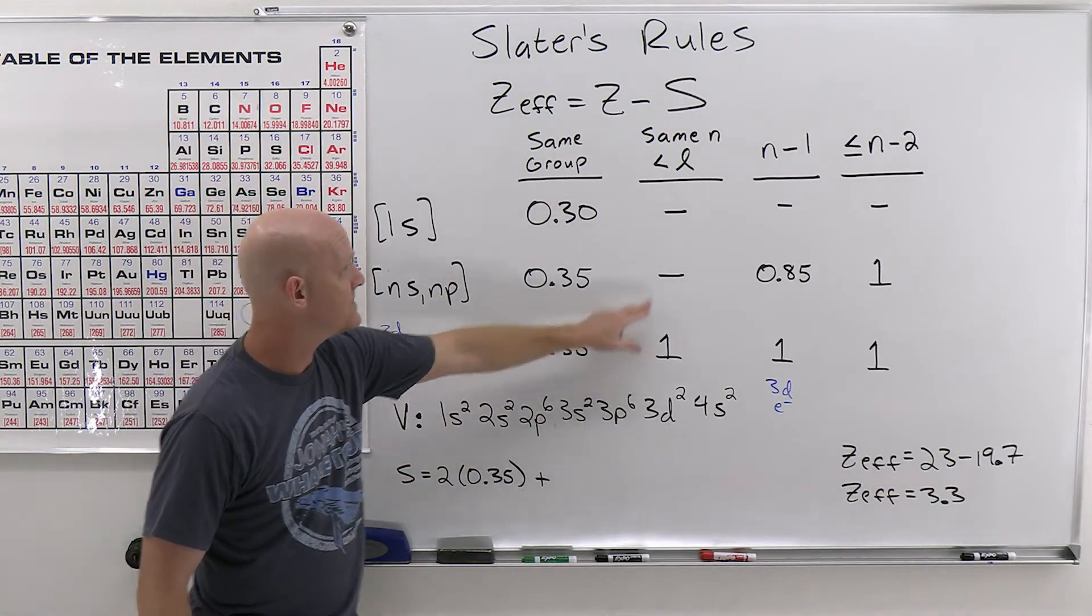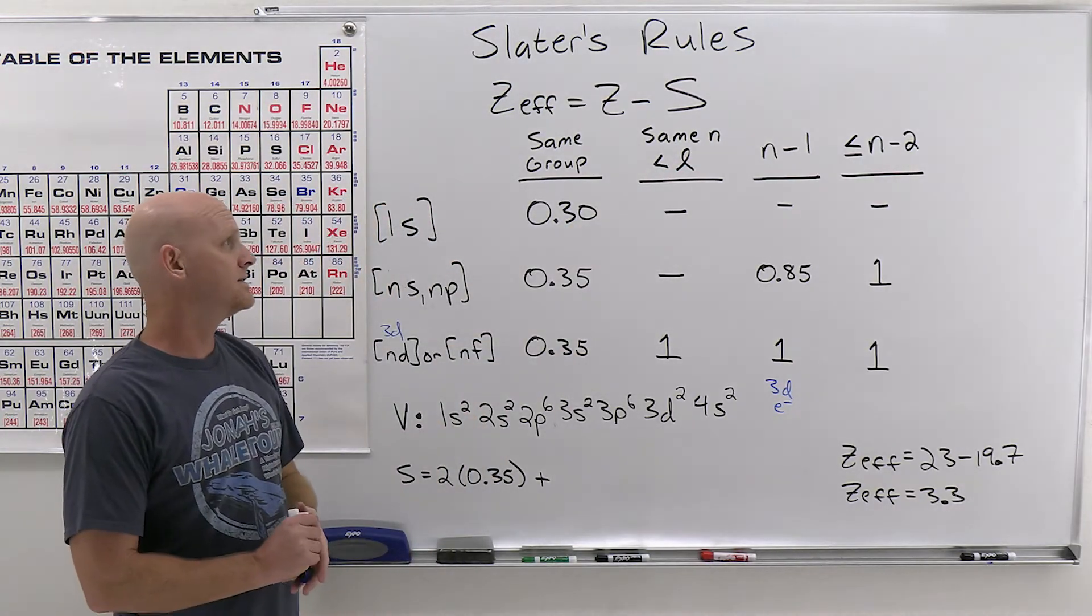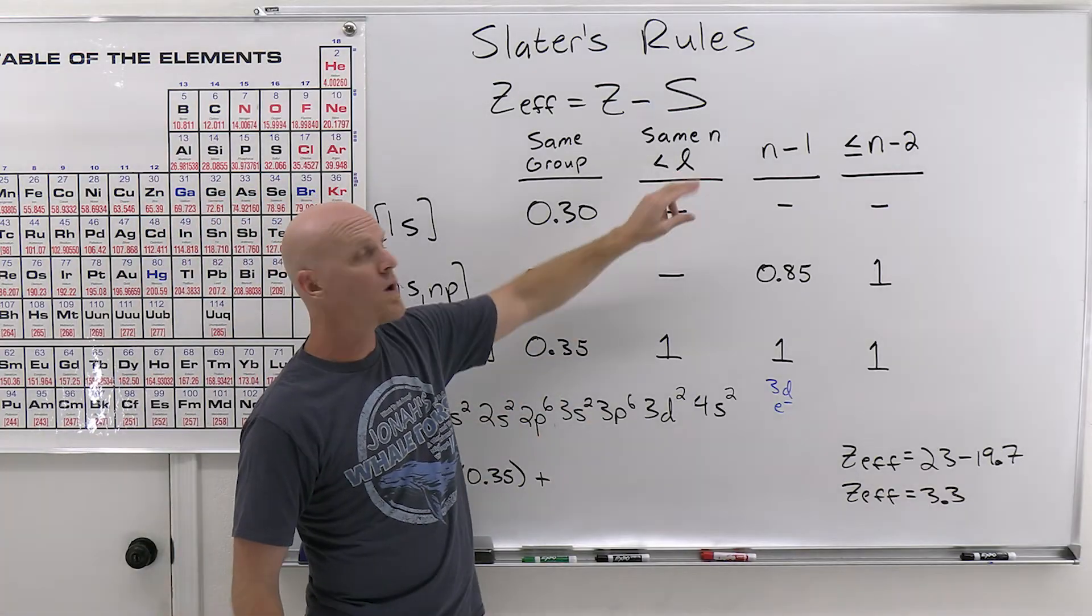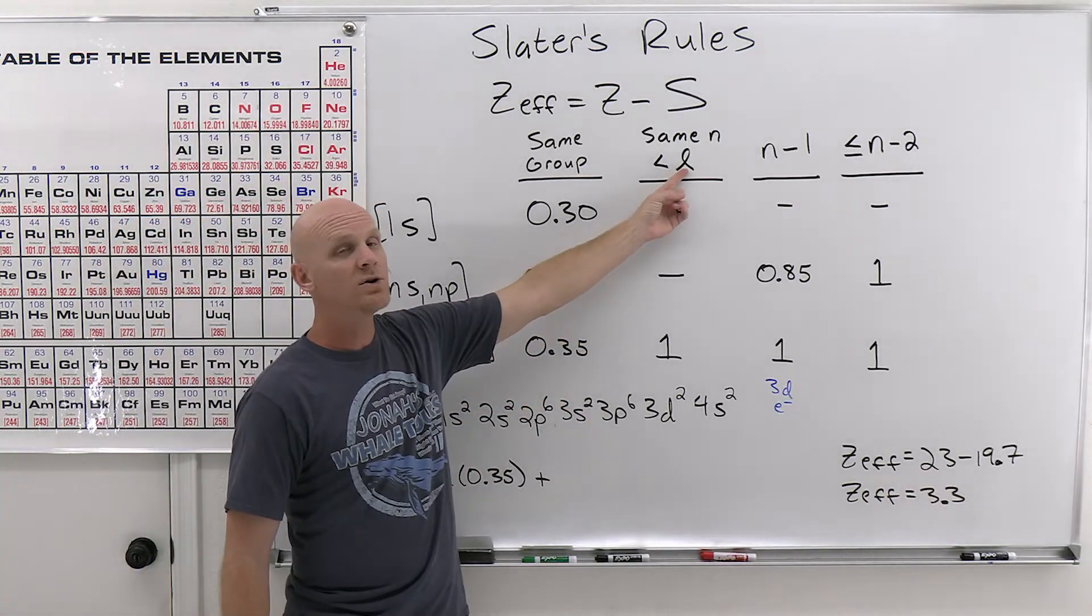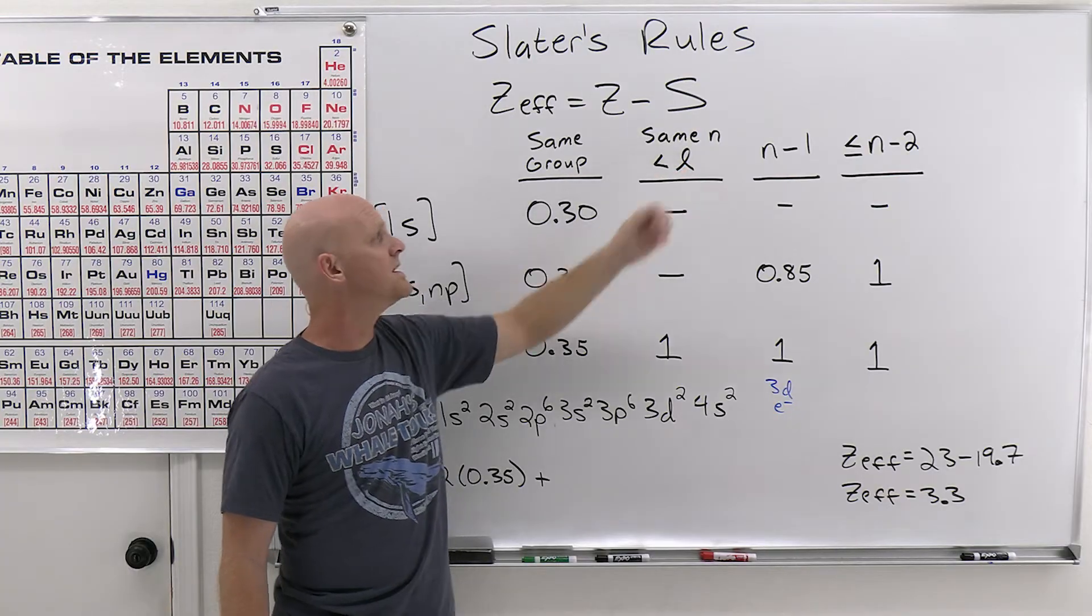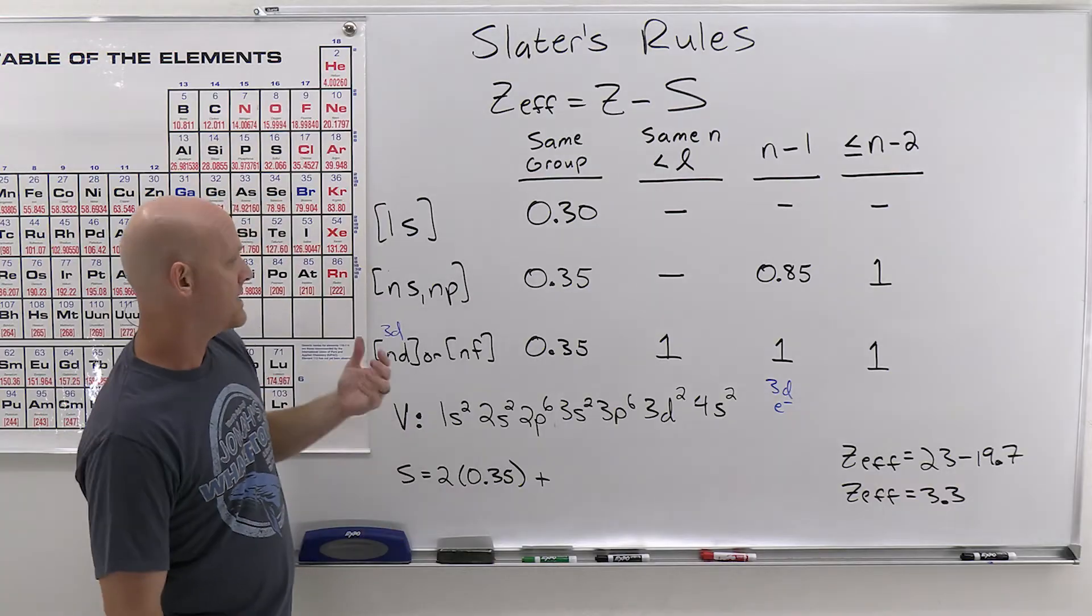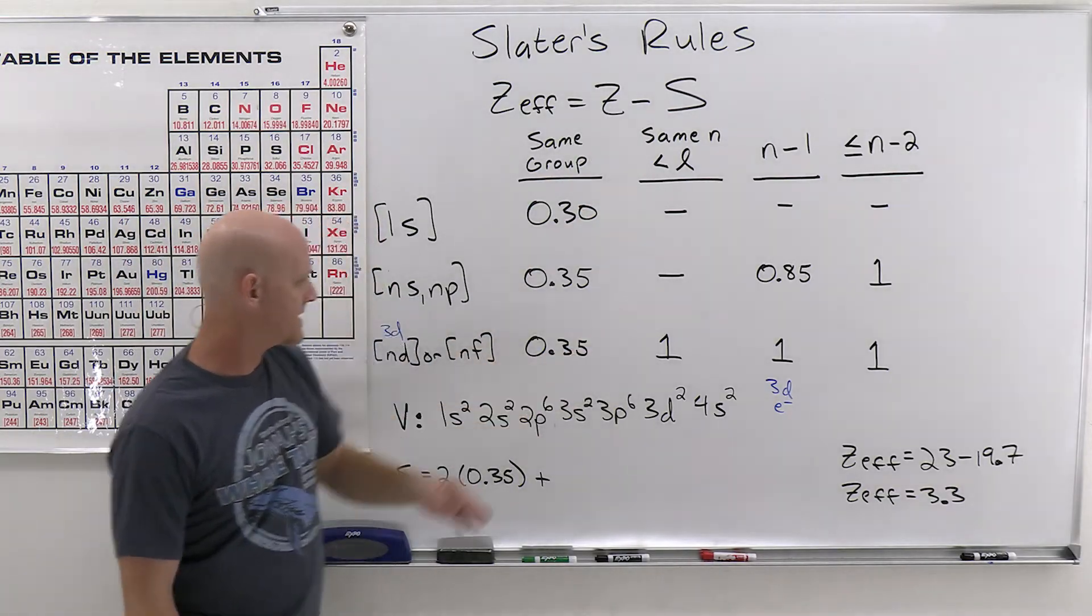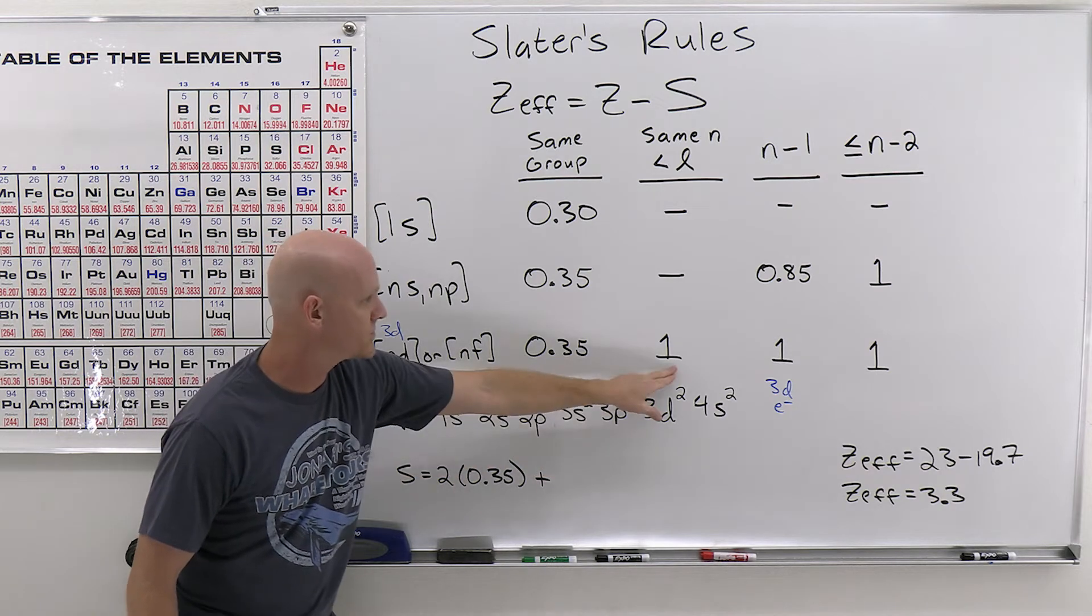And again, even if they're in the same shell, but have a lower magnetic quantum number. So like in this case, we're looking at the 3ds, which has an L value of 2, if you recall, with quantum numbers. So if I have an L value of 1 or 0, i.e. s or p orbitals, then that's what's going to apply to this column right here.